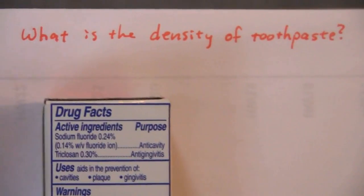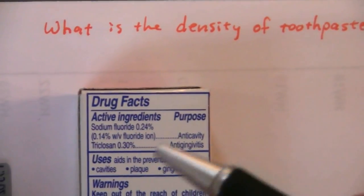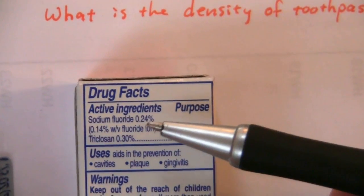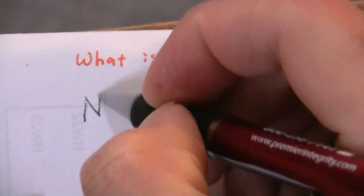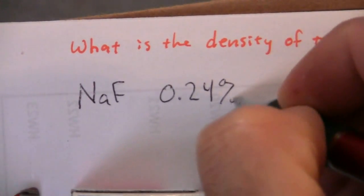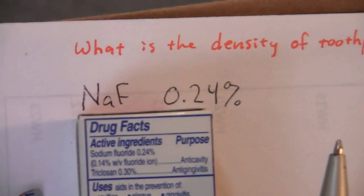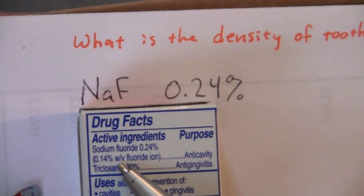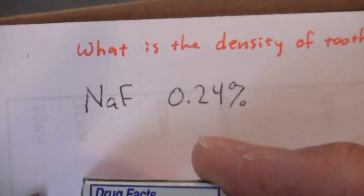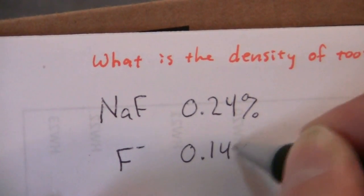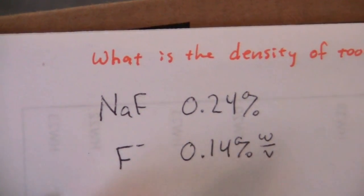And on the back, you'll notice there's a couple of useful values. We have the sodium fluoride content as 0.24%, and it also has a line here saying 0.14% weight volume fluoride ion.